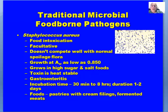Staphylococcus aureus is a food intoxication — the preformed toxin is in the food prior to the time it is consumed. It's facultative and doesn't compete well with normal spoilage flora. One of the major places we get contamination with S. aureus is actually from food workers, and contamination typically occurs after the food product may have been cooked and processed. This organism can grow at lower water activities.